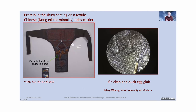A beautiful object I had the chance to work on was a baby carrier from the Dong ethnic minority, primarily in the Yunnan area of China. We were interested in identifying the shiny coating on the baby carrier. It turned out to be a mixture of chicken and duck egg white. The material is first dyed with indigo, then coated multiple times with egg white mixed with water, and once dried it's calendered or pounded to give it a shiny appearance.